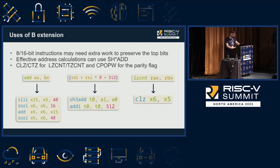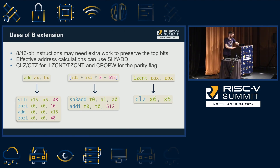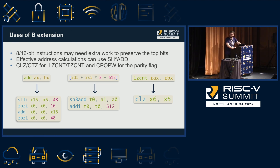We also make extensive use of the bit manipulation extensions. 8 and 16-bit instructions that use 8 and 16-bit operands tend to need extra work to preserve the top bits. You can do that by masking out each operand, doing the operation, and inserting it back. But for add, for example, what we can do to reduce the instruction count is shift the source operand up and rotate the other operand, do the operation, and then rotate it back — so you don't need to extract or insert the bits.